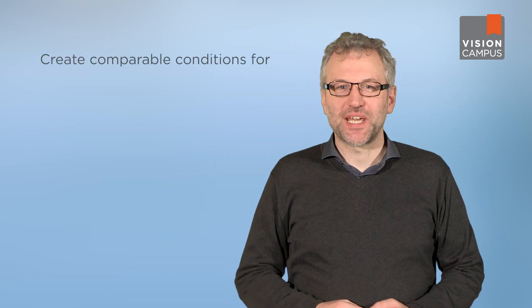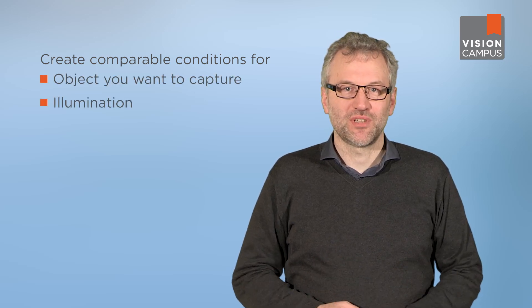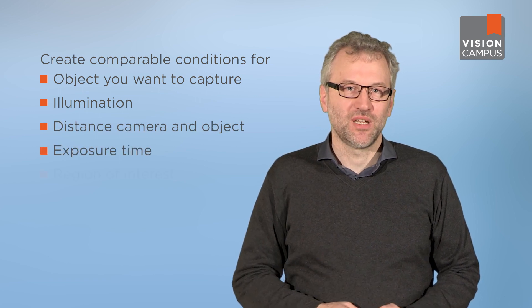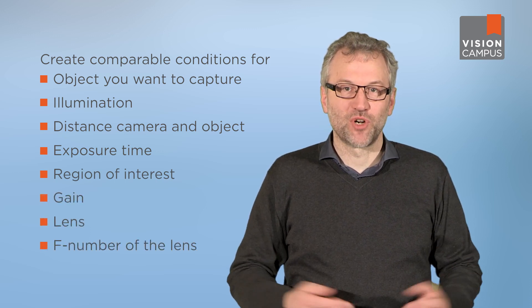Whatever your requirements, you must be careful to create comparable conditions when assessing two or more different cameras. You are well set if the sensor sizes of the cameras are the same, as this gives you an ideal basis for comparison. However, a few more conditions must be considered: you need similar conditions with regard to the object you want to capture, the illumination, the distance between camera and object, the chosen exposure time, the region of interest, the gain, the lens, and the f-number of the lens.